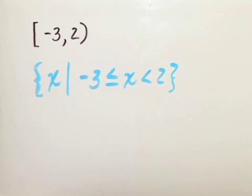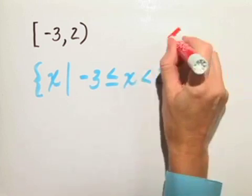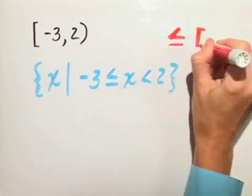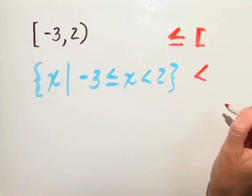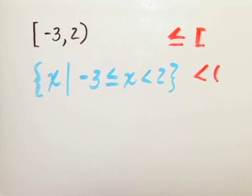The reason that we do that is because the less than or equal to sign is translated with a bracket. However, the strict inequality less than is translated with a parentheses.